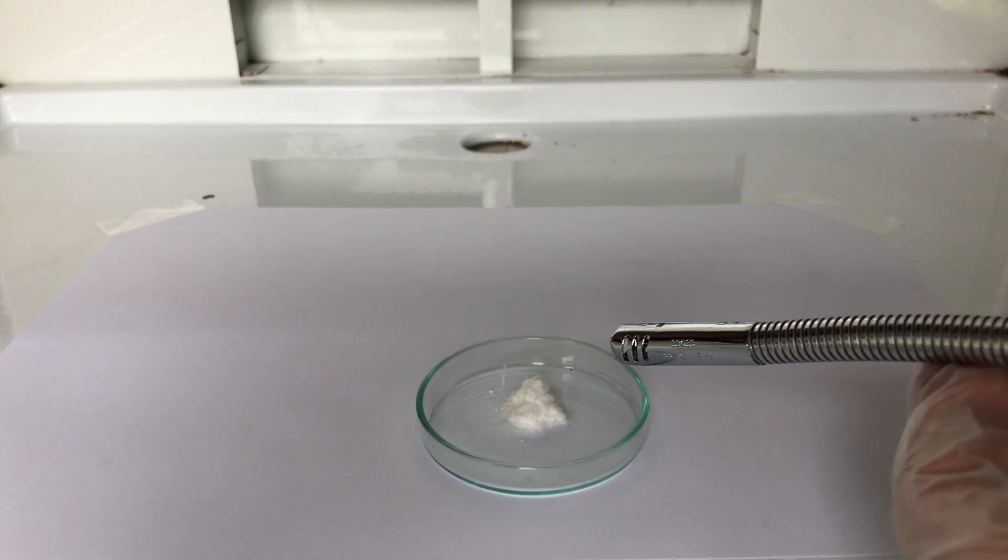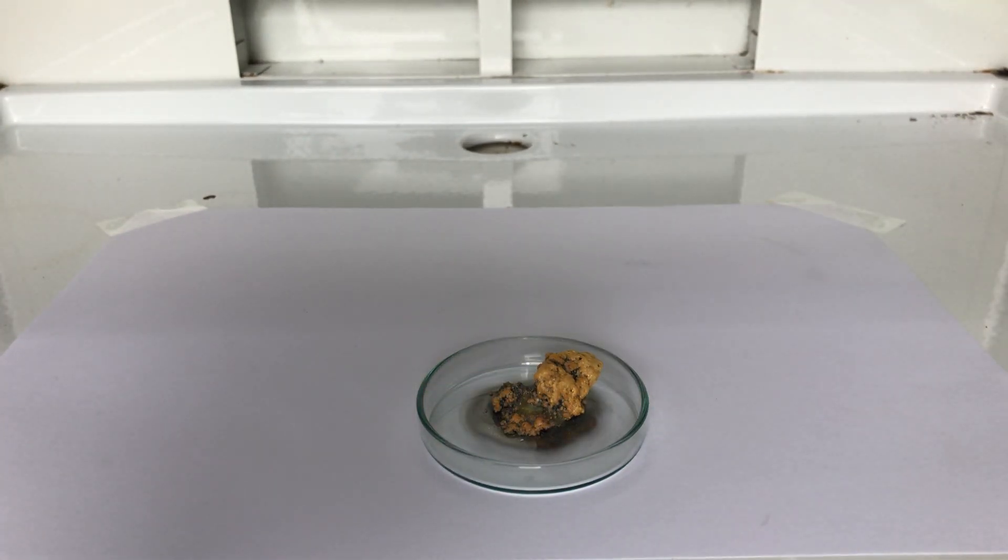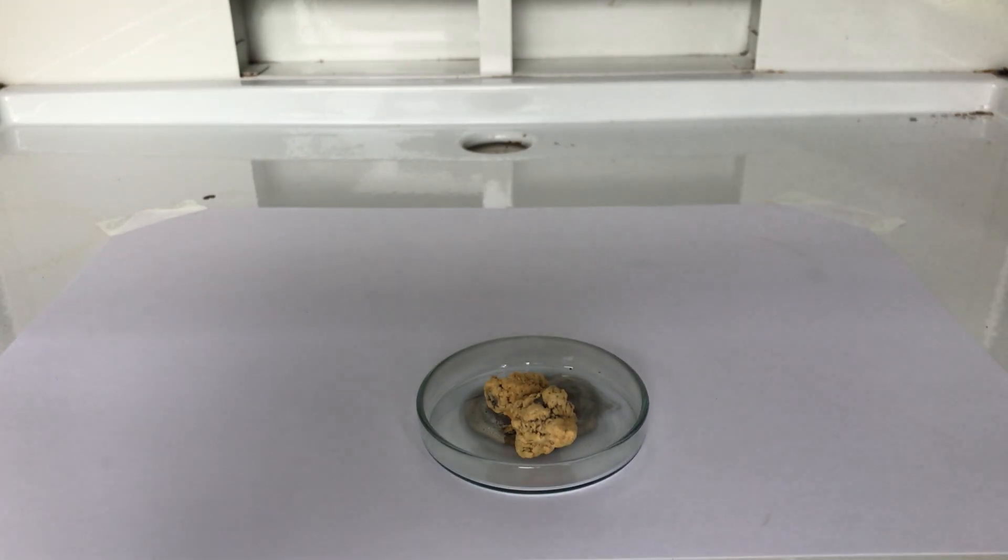When we light the mercury thiocyanate on fire, these beautiful snakes appear. Mercury thiocyanate decomposes to form carbon nitride, mercury vapors, carbon dioxide, sulfur dioxide, and carbon nitride further decomposes to form deadly dicyan gas.